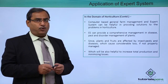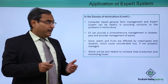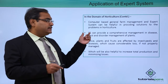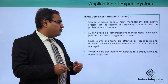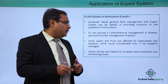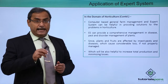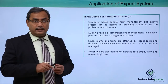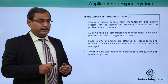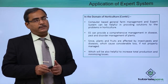Different kinds of pest-related problems and different kinds of diseases of horticulture elements can be managed in a comprehensive way with the help of expert systems. Since plants and fruits are affected by insect pests and diseases which cause considerable loss if not properly managed, and in some locations there may be seasonal tendencies, we must remain proactive rather than reactive, which will help increase total production and minimize losses.